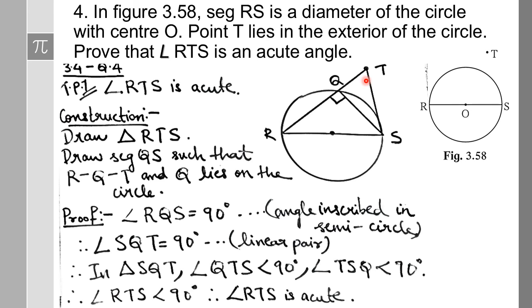So angle T plus angle S equals 180 minus 90 = 90 degrees. Since their sum is 90 degrees, each is less than 90. Hence angle RTS is an acute angle. Here we used the corollary of the inscribed angle theorem: an angle inscribed in a semicircle measures half of 180 degrees, which equals 90 degrees.